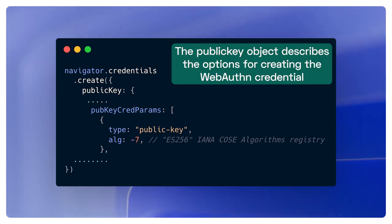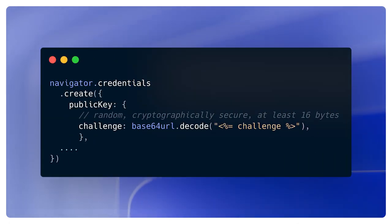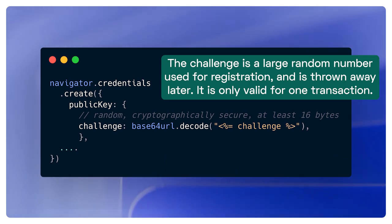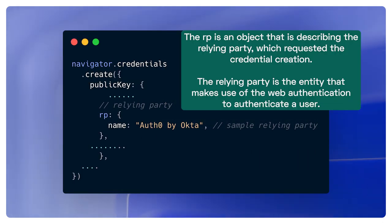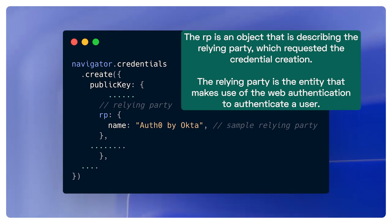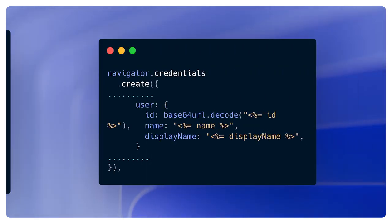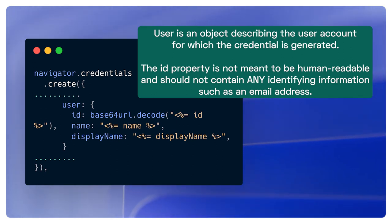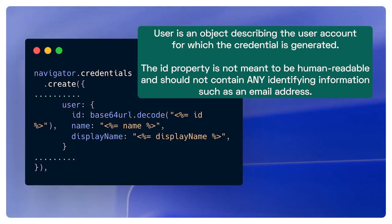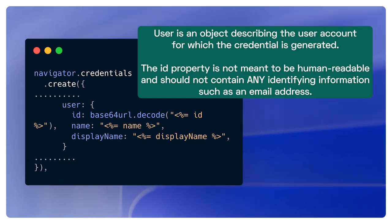The public key object describes the options for creating the WebAuthn credential. The first thing you can pass in is the challenge — a large random number used for registration that is thrown away later and is only valid for one transaction. The next property is RP, an object describing the relying party which requested the credential creation. The relying party is the entity that makes use of WebAuthentication to authenticate a user — this could be Auth0, Facebook, or Google. The next property is user, an object describing the user account for which the credential is generated. The ID property is not meant to be human readable and should not contain any identifying information, such as an email address.